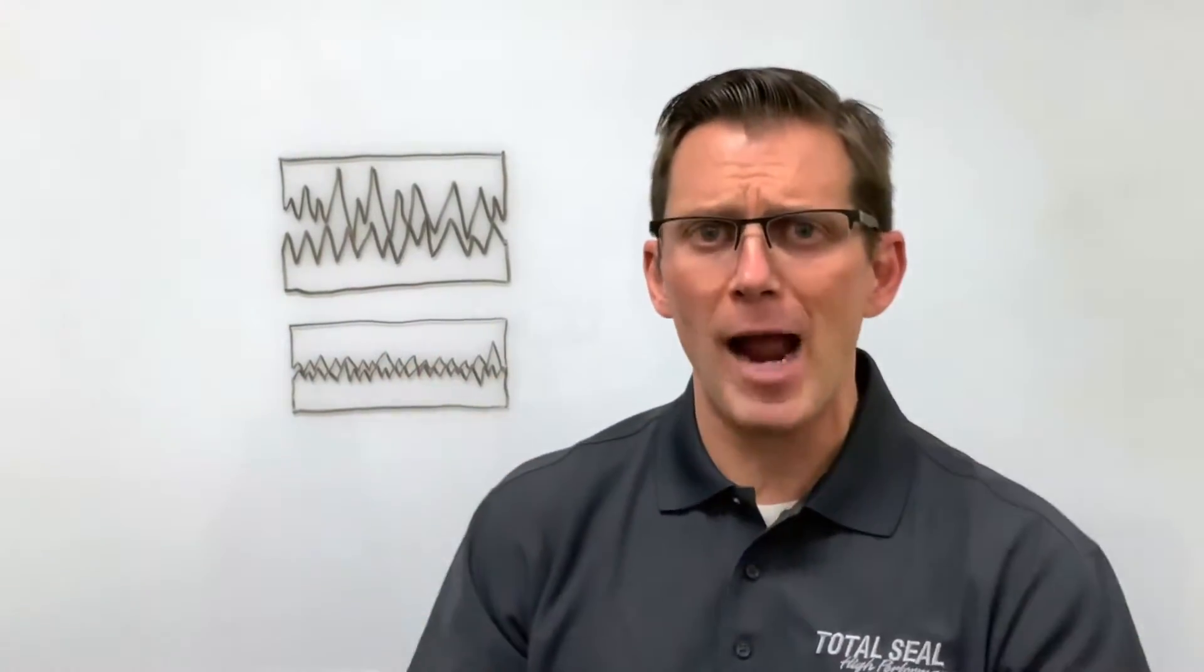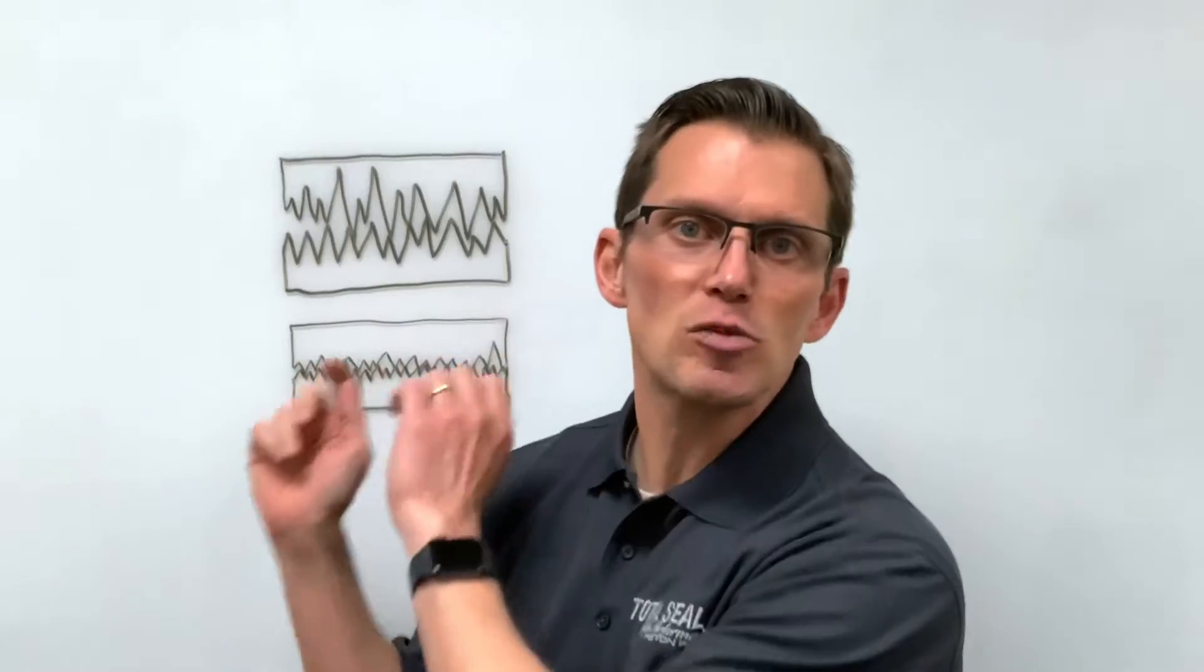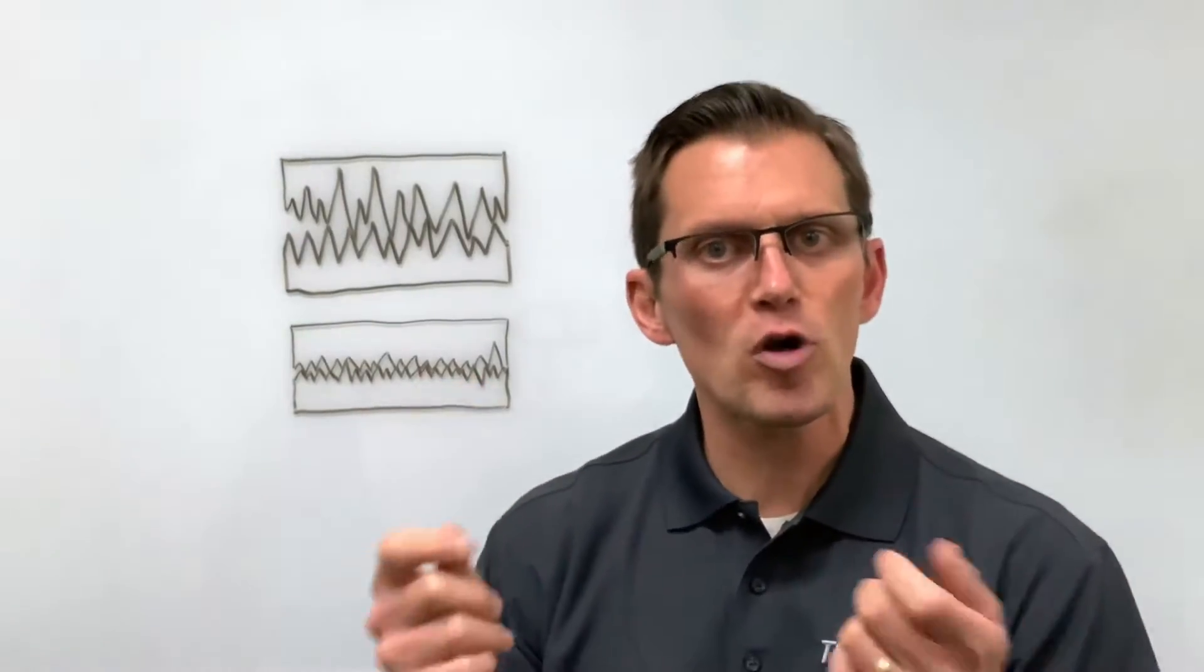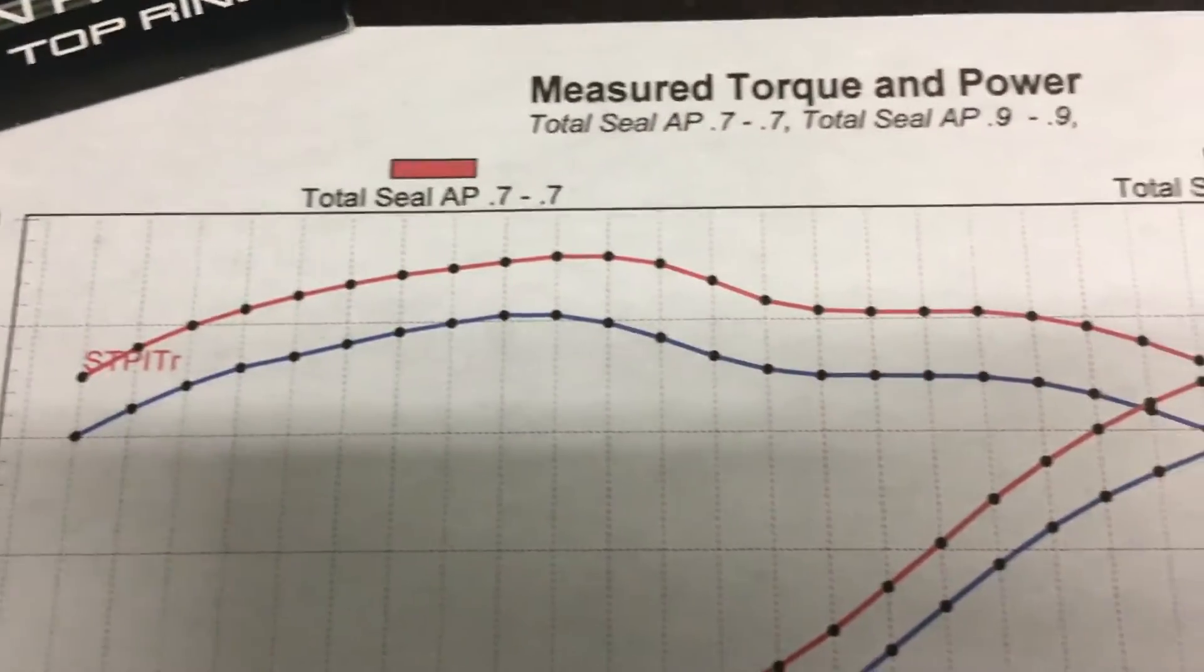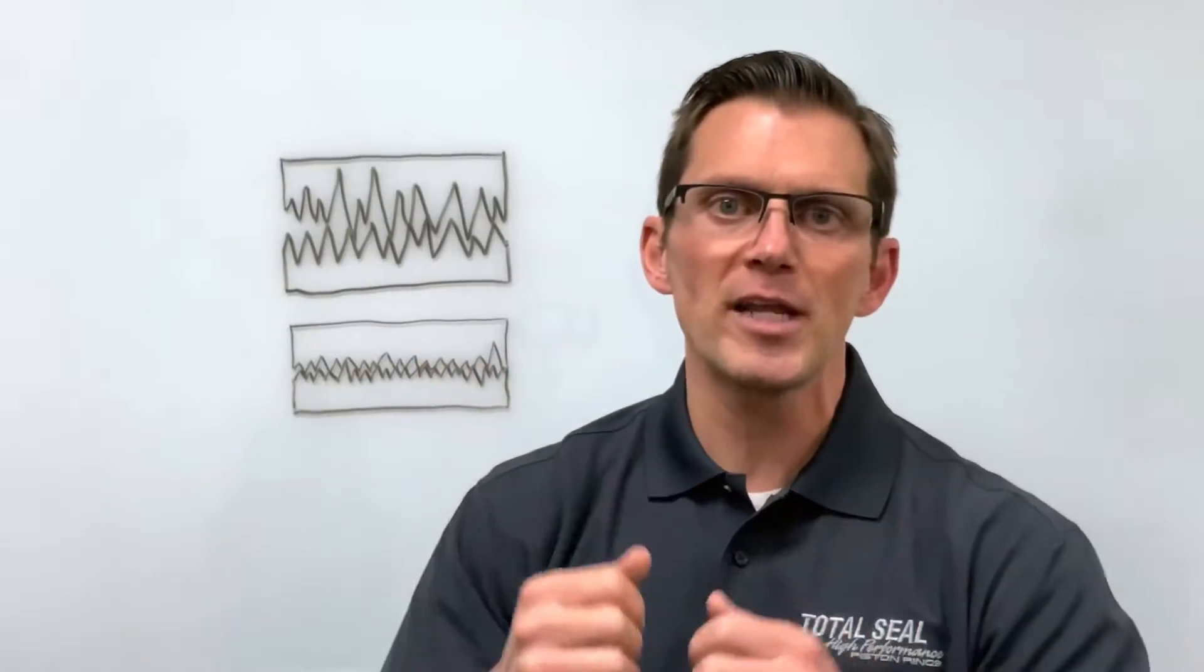So if you're looking to make more power, to improve durability, improve longevity in your engine, you need to look at smoother surface finishes. Look at upgrading to either an AP ring or to the diamond finish ring to improve that surface finish, that improves the ring seal, that improves the performance and the durability of your engine.